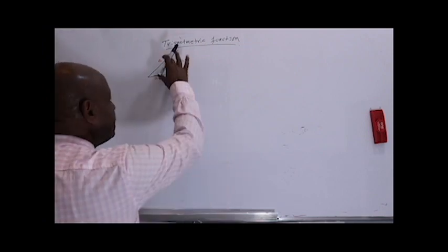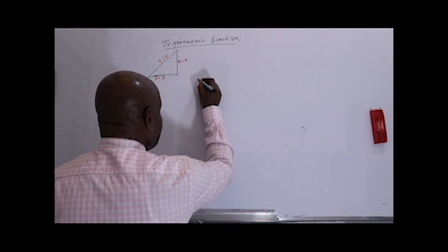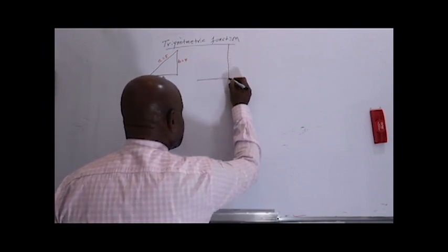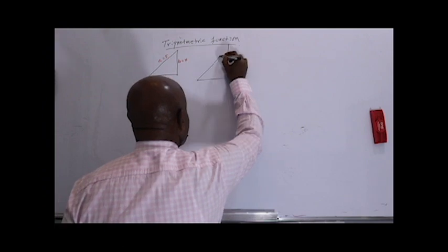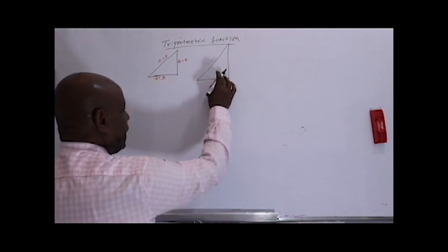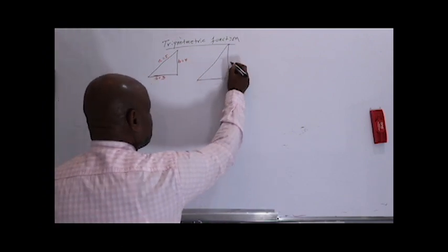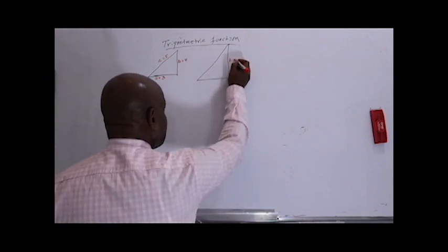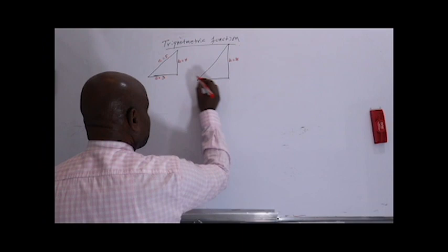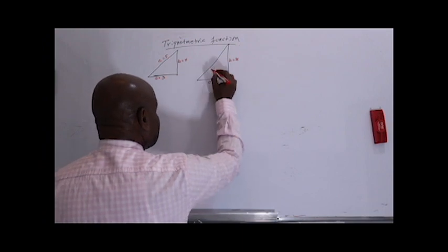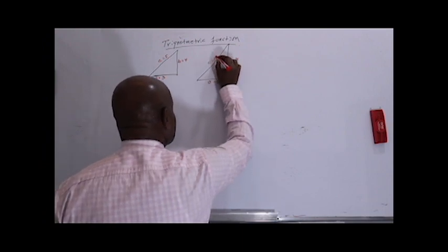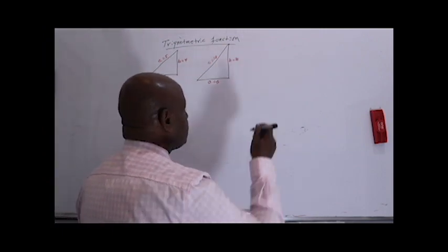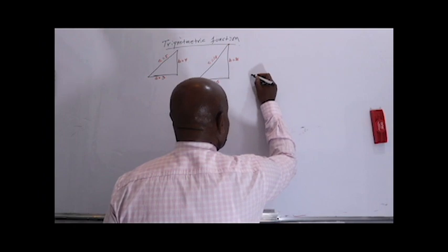Let me double this triangle. So we have another triangle here. The magnitude of B is 8, the magnitude of A is 6, and C will be 10.